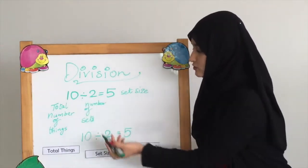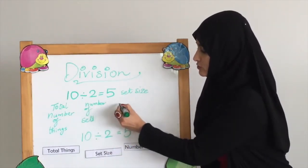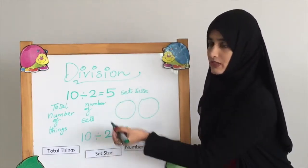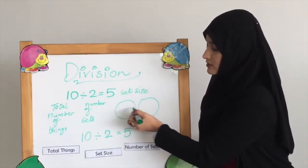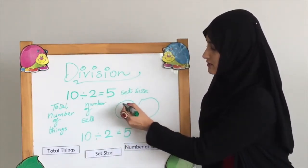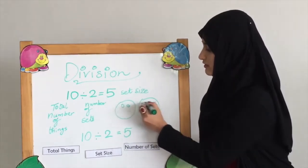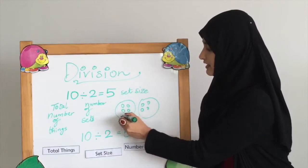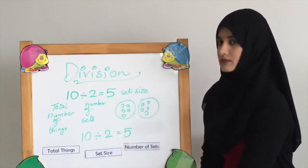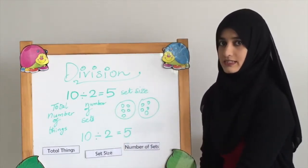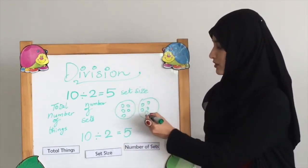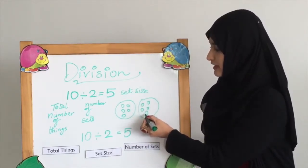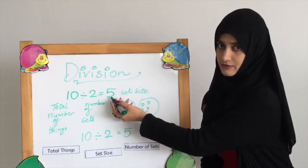10 divided by 2 means we need to make two sets. Now we need to distribute the number 10 between these two sets: 1, 2, 3, 4, 5, 6, 7, 8, 9, 10. The answer is the set size. How many balls do we have in one set? 1, 2, 3, 4, 5. Five is our answer.